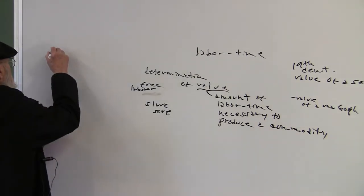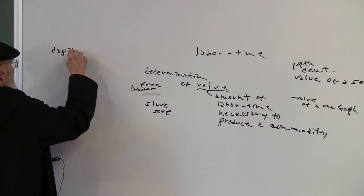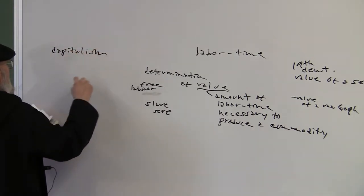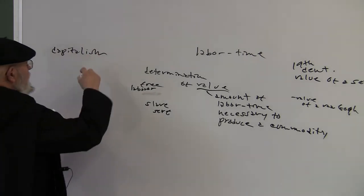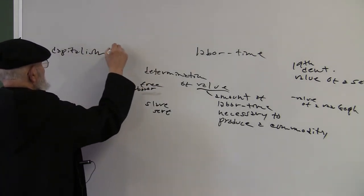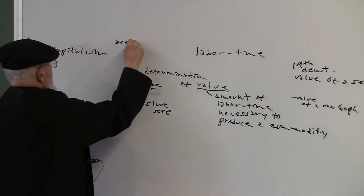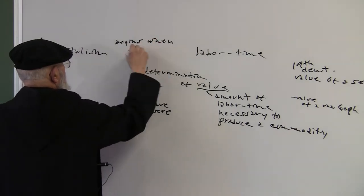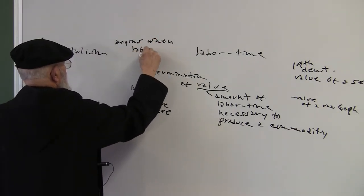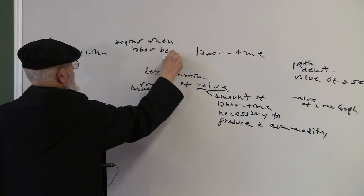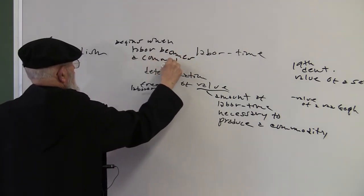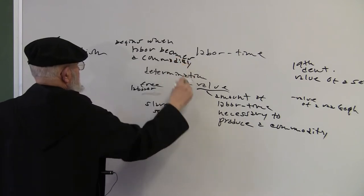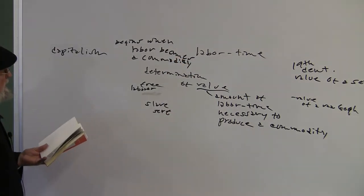Capitalism is, when does capitalism begin? Capitalism begins when labor becomes a commodity. In other words, when it is something bought and sold on the market.